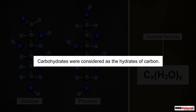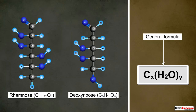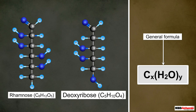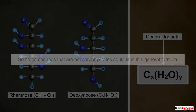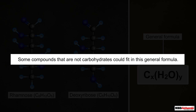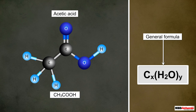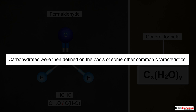Therefore they were considered as the hydrates of carbon. However, later it was known that many carbohydrates such as rhamnose (C₆H₁₂O₅) and deoxyribose (C₅H₁₀O₄) did not fit in this general formula. Also, some other compounds that are not carbohydrates could fit in this general formula — for example, acetic acid (CH₃COOH) could be written as C₂H₂O. To overcome these confusions, carbohydrates were then defined on the basis of some other common characteristics.